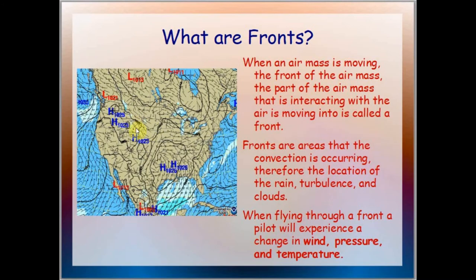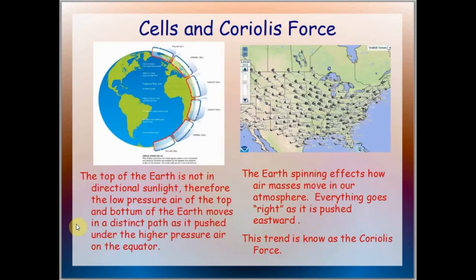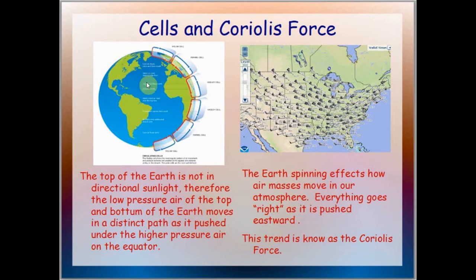You can kind of see how the fronts are moving — they come in like this. Another way fronts generally move is due to the fact that the top of the Earth is not in direct sunlight, so the low pressure air at the top and bottom of the Earth moves in a distinct path as it pushes under the higher pressure air on the equator. I live in Pennsylvania, and a lot of people wonder why the northeast of America is getting colder due to climate change — it's because there is more convection in the atmosphere, so we're getting more low pressure air masses from the north pole.